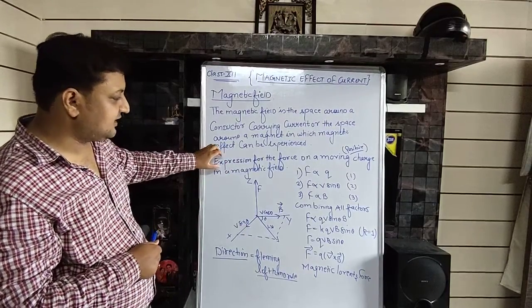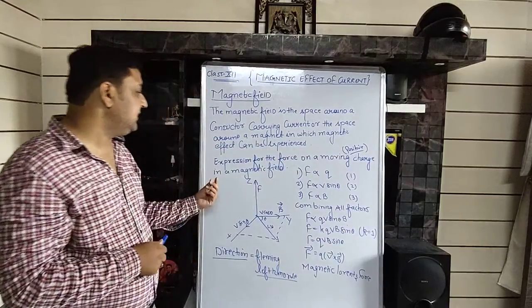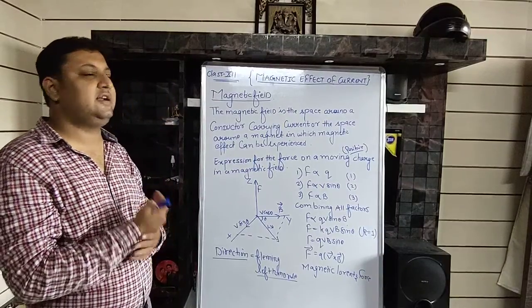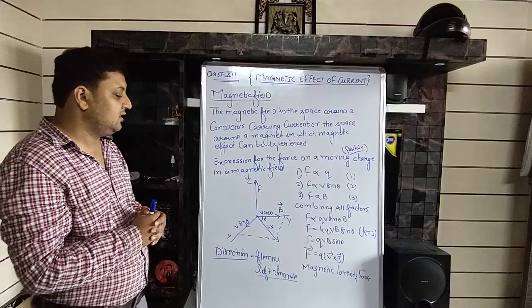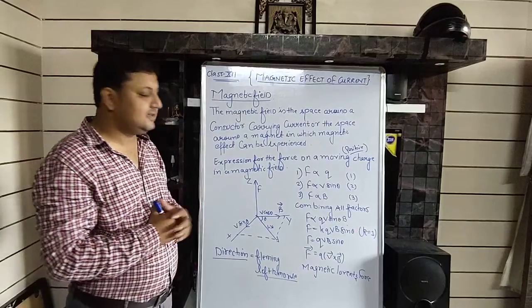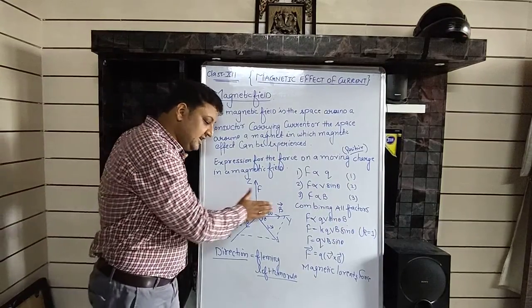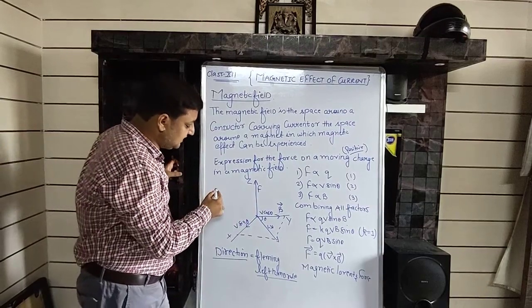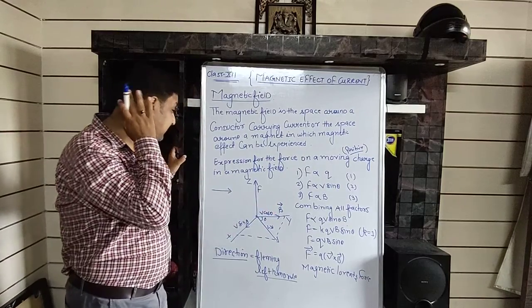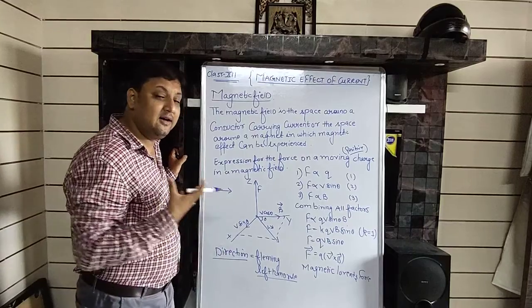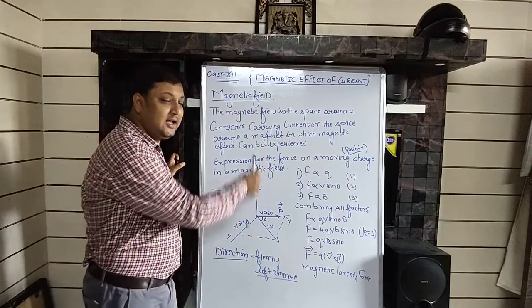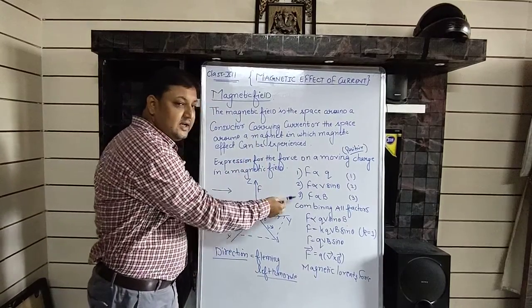Here we have to derive the expression of force on a moving positive charge in a magnetic field, because we need to define the magnetic field using this force expression. We have three axes: x-axis, y-axis, and z-axis. The magnetic field is traveling along the y-direction.